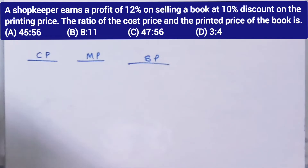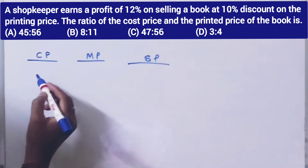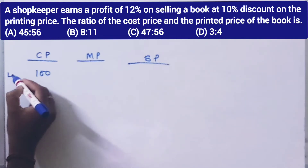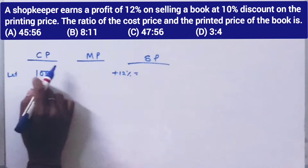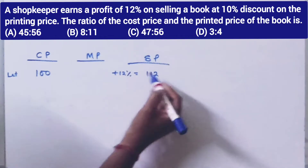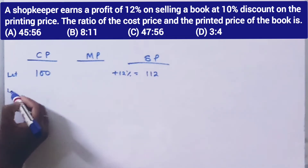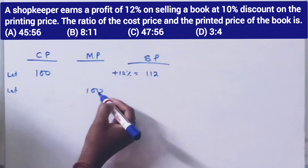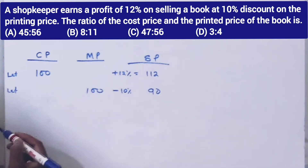Profit is 12%, so the selling price is 112. And there is a 10% discount on the printing price, so the mark price is 100, and the selling price after 10% discount is 90 rupees.